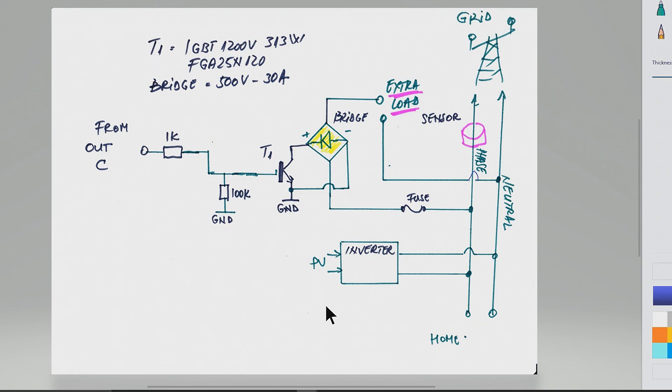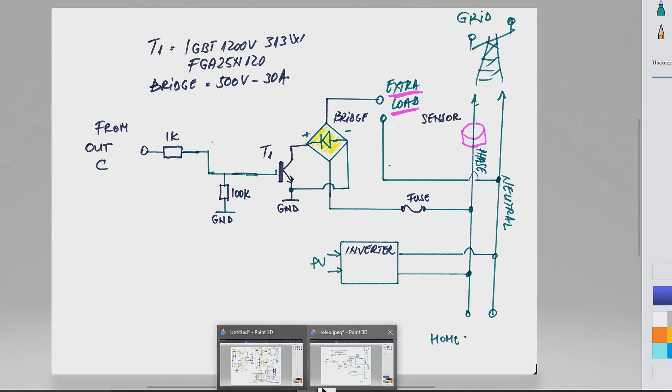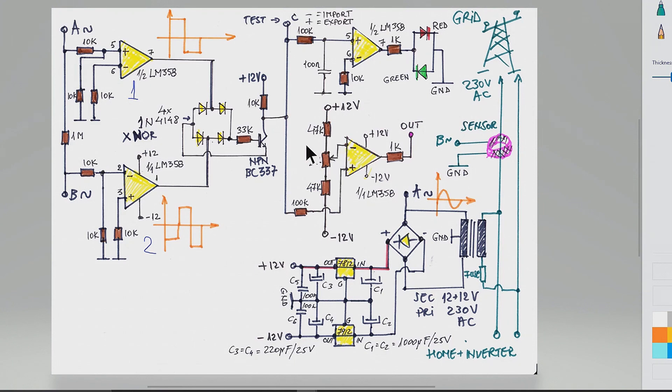That extra load can be used for a boiler for having hot water, or it can be used to have a fan or anything else. The point is we don't want to let any power going to the grid from the inverter. That's the idea of the thing, and all this can be adjusted by this 10 kilo trimmer.